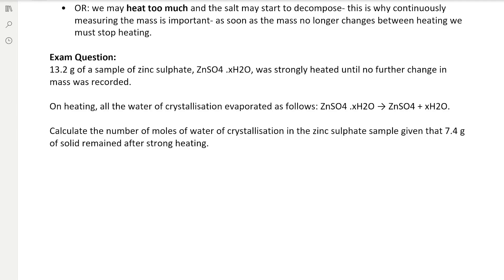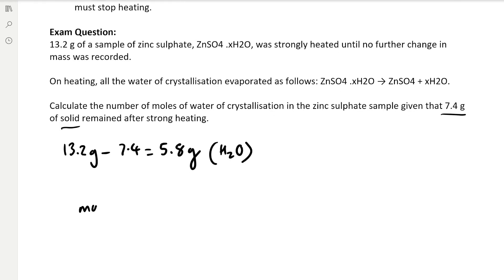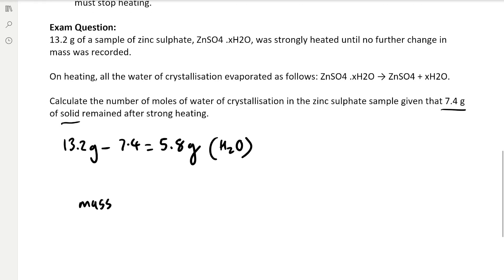The first thing we can do is find our mass of water that we removed. We know we've got 7.4 grams of solid remaining, so that means we've evaporated 5.8 grams of water. Then we can use the same method as above to find our moles and our ratio to find the value of X.